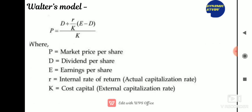Walter's model is one of the earlier theoretical models that clearly indicates the choice of appropriate dividend policy always affects the value of the enterprise. The formula to determine market price per share is: P = [D + (r/Ke) × (E − D)] / Ke, where P is market price per share, D is dividend per share, r is internal rate of return, Ke is cost of capital, and E is earnings per share. Growth firms (r > Ke) must reinvest retained earnings since existing alternative investments offer a lower return.